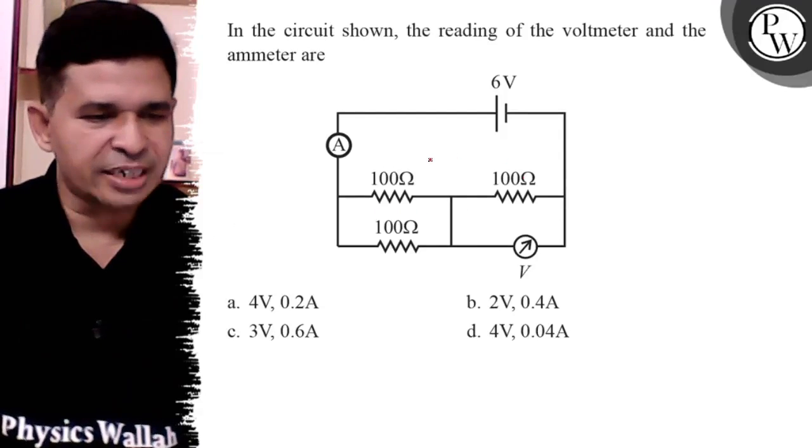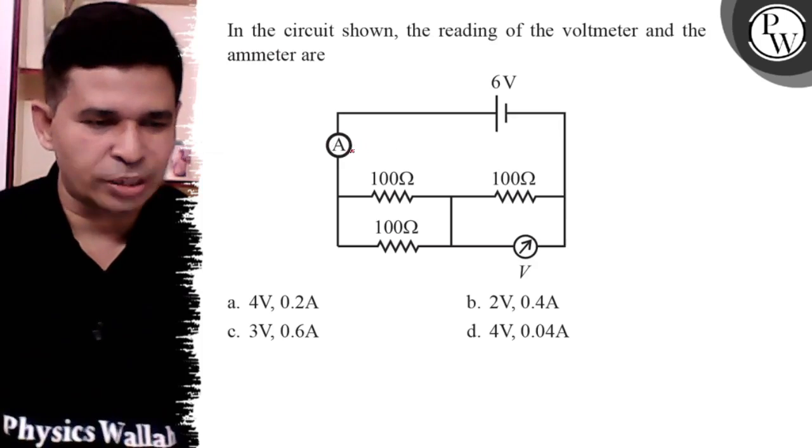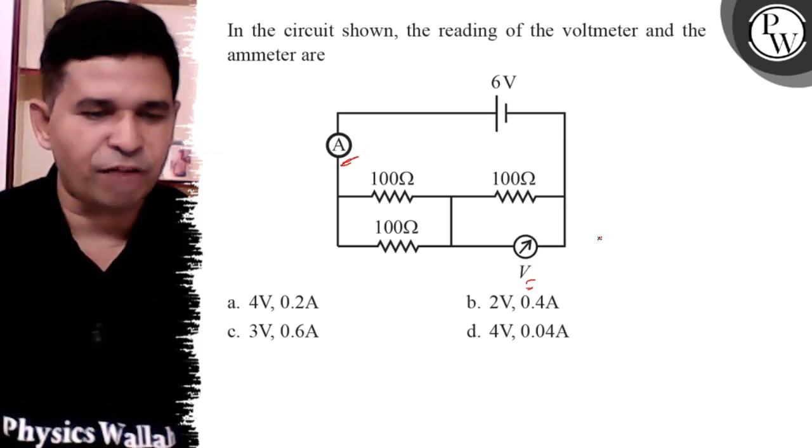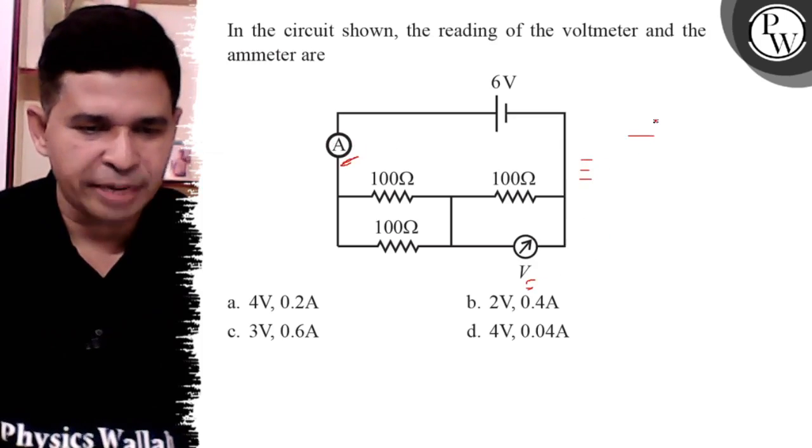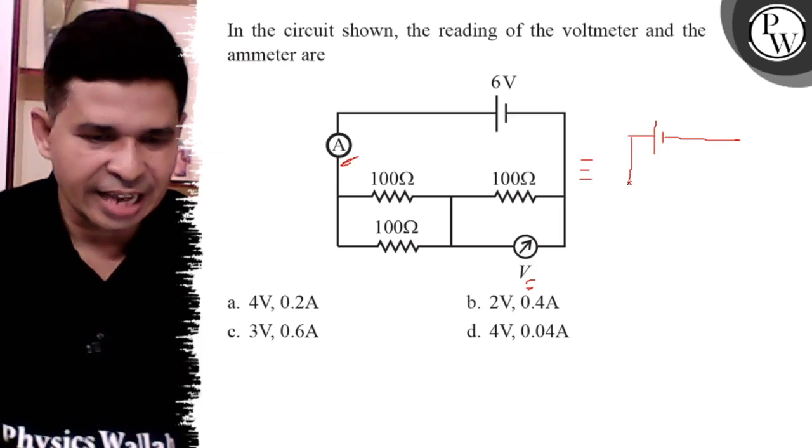Ammeter has zero resistance so it is a short circuit, and voltmeter has infinite resistance so it is open circuit. After removing voltmeter and ammeter, what is the circuit diagram?